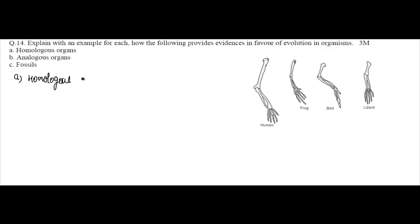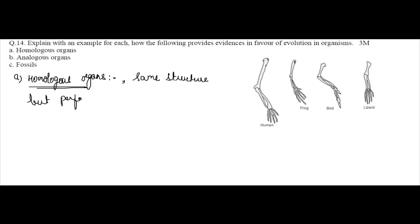What are homologous organs? These are the organs which have the same basic structure but perform different functions. The study of homologous organs suggests that these organs have the same structure but perform different functions, and they are evolved from a common ancestor.